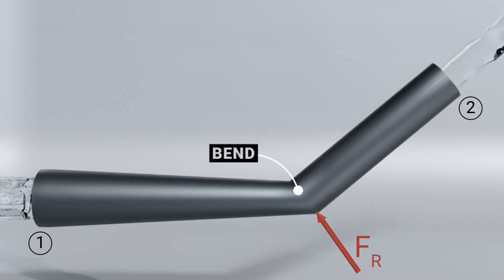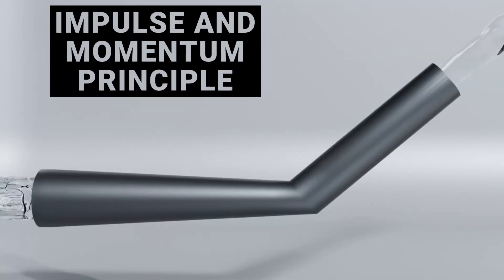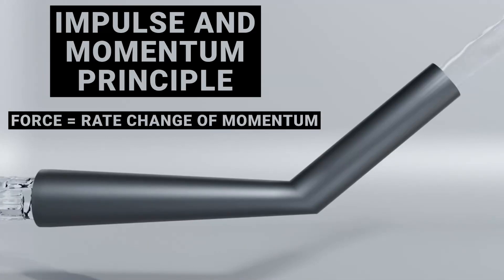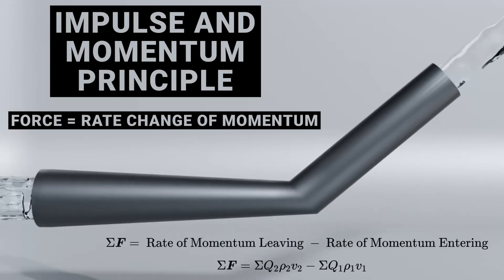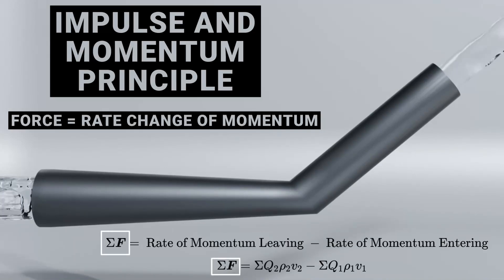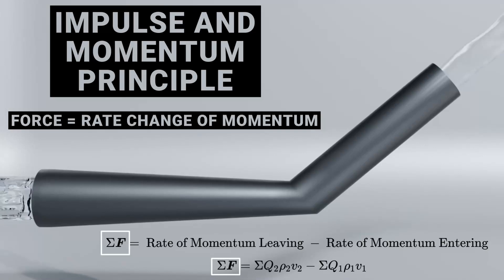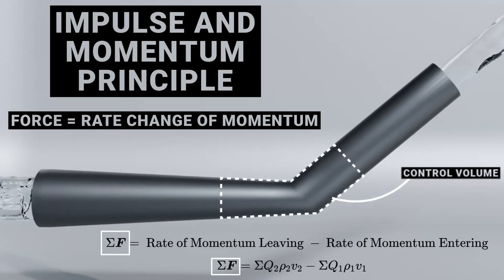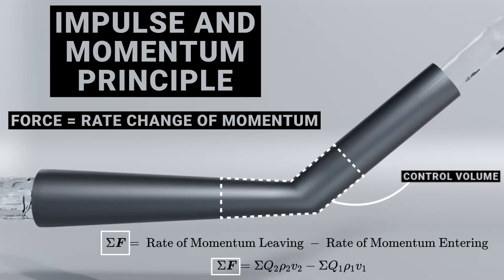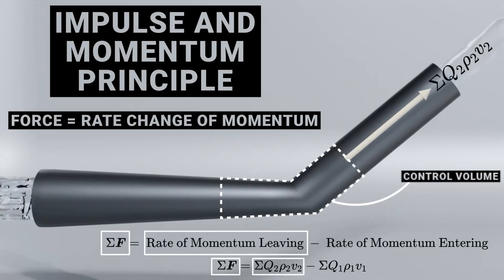We can rely on the law of conservation of momentum, or in other words, the impulse and momentum principle. This principle says the force in any given direction acting on the fluid is equal to the rate of change of momentum of the fluid. In equation form, on the left side of the equal sign we have the resultant of all external forces acting on a control volume — the arbitrary point in space where something interesting happens, which is right at the bend. On the right side we have the rate of momentum of the fluid leaving the control volume in the same direction as the force.